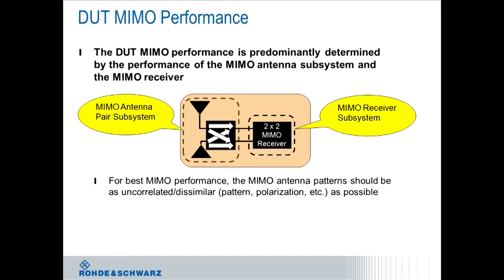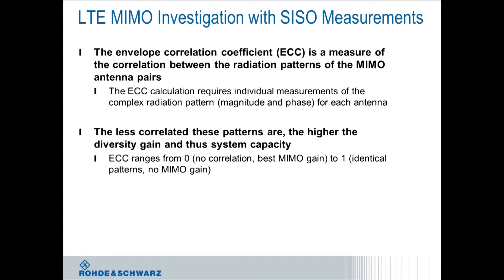What we are doing here is really looking at the antenna subsystem performance. We should highlight that the best MIMO performance is achieved when the two antenna patterns are totally uncorrelated — very, very dissimilar. So the envelope correlation coefficient, ECC, is basically a figure of merit of how correlated your antenna patterns are.